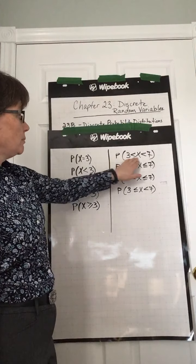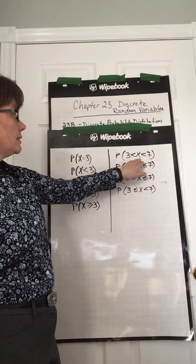If we're finding the probability 3 less than x less than 7, we're looking in between 3 and 7. And this is discrete random variables. So therefore, we're looking for x to be 4, 5, or 6 only. Add up those probabilities. Whereas here, probability 3 less than or equal to x less than or equal to 7, we're looking for probability of x being 3, 4, 5, 6, and 7. Add up all of those.